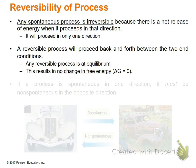Let's talk about the reversibility of processes. Any spontaneous process is considered irreversible — you can only go in one direction. If the forward reaction is spontaneous, then the reverse reaction will be non-spontaneous and will require energy. A reversible process will proceed back and forth between two conditions. Any reversible process is considered at equilibrium — one direction will be spontaneous and the opposite will be non-spontaneous. Any equilibrium reaction results in no change in free energy, so delta G equals zero.